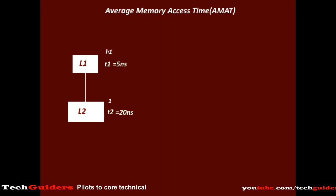If every request is a hit — meaning if we can find everything in L1 — then we need not go to the lower levels. In such a case, per request the access time is always 5 nanoseconds, which is very low. But this is not practical. And if every request is a miss, for every request we should go to the lower level and hence the access time will be much higher. So by making use of this hierarchy, we should try to increase the hit ratio to the maximum, bringing the access time to an average level such that average memory access time equals hit ratio × hit time plus miss ratio × miss time.